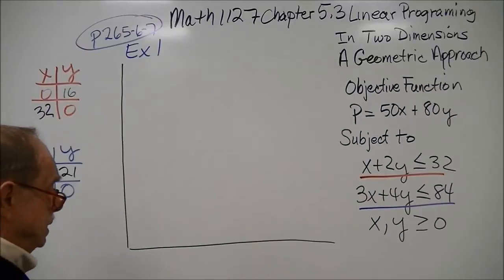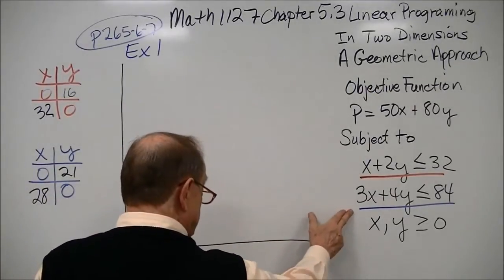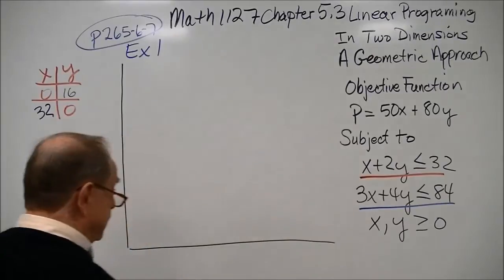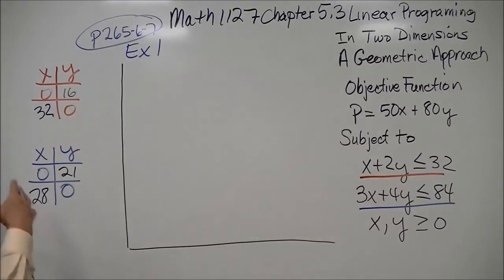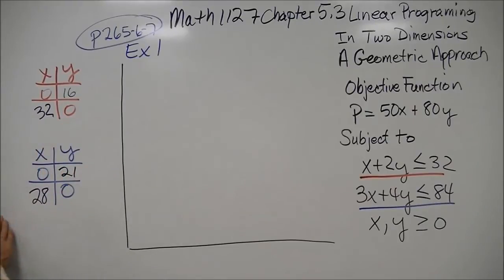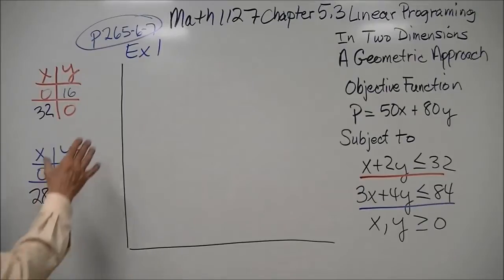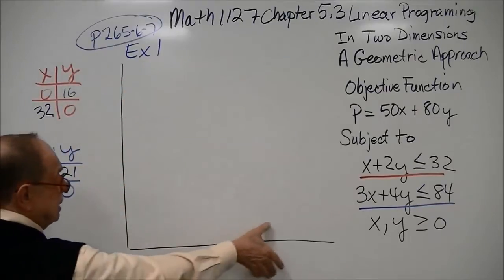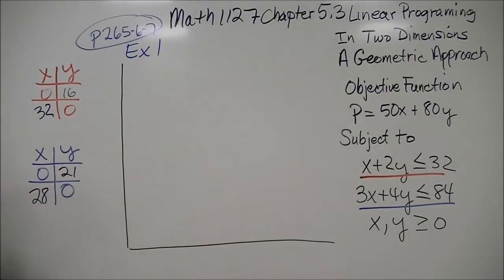As we look at the red inequality and the blue inequality, what I've done is what we've done before. I'm going to put it into a t-chart where I get my x and y-intercepts. You're wondering, what kind of scale should I have on my graph? As you look at it, the largest x value here is 16, here it's 21.